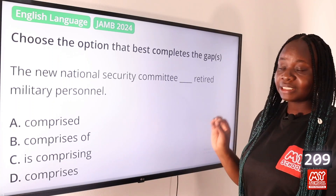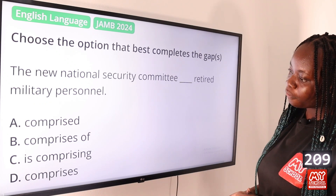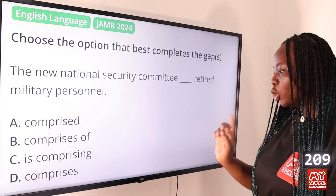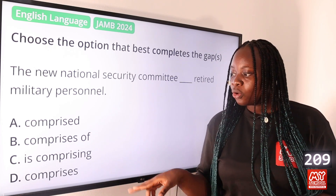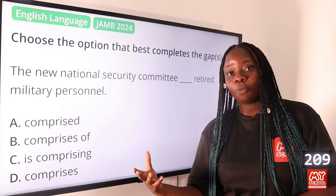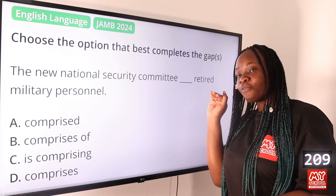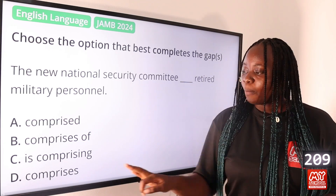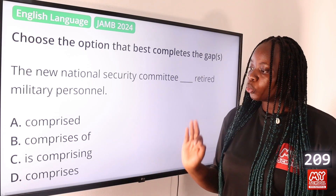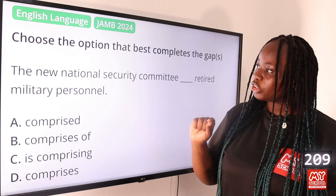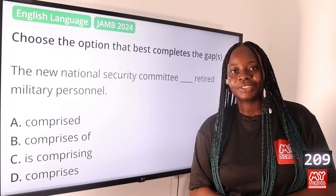Question 209: Choose the option that best completes the gap: 'The new national security committee dash retired military personnel.' Option A: comprised, B: comprises of, C: is comprising, D: comprises. The answer is option D, comprises. When using the verb 'comprises' you do not add the preposition 'of.' You use 'consists of' or 'is made up of,' but 'comprises' stands alone: 'The new national security committee comprises retired military personnel.'